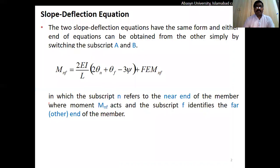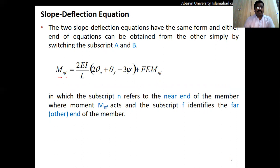In the last lecture I told you about the basic slope and deflection equation derived after performing various mathematical steps. That equation is: M_NF equals 2EI over L into (2 theta_N plus theta_F minus 3 psi) plus the fixed end moment, where N is the near end of the beam and F indicates the far end of the beam.